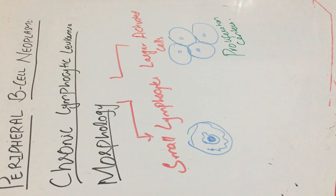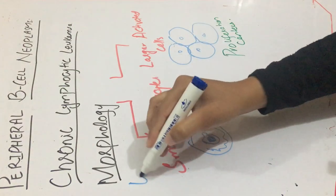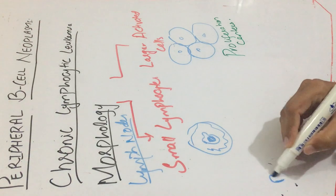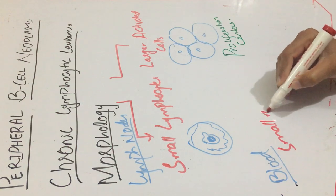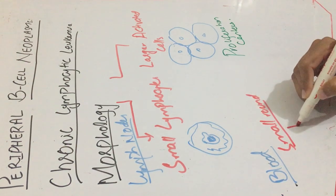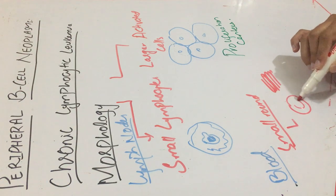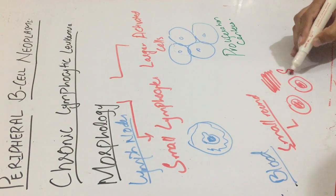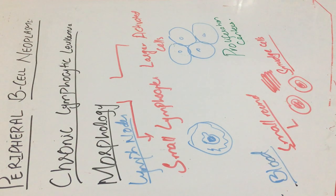This was in the lymph nodes, where two varieties of cells are present: small lymphocytes and larger activated cells. Now in the blood, when we make the peripheral blood smear, the small round lymphocytes are disrupted. When they are disrupted while making the peripheral blood smear, these cells are known as smudge cells, which are also present in chronic lymphocytic leukemia.